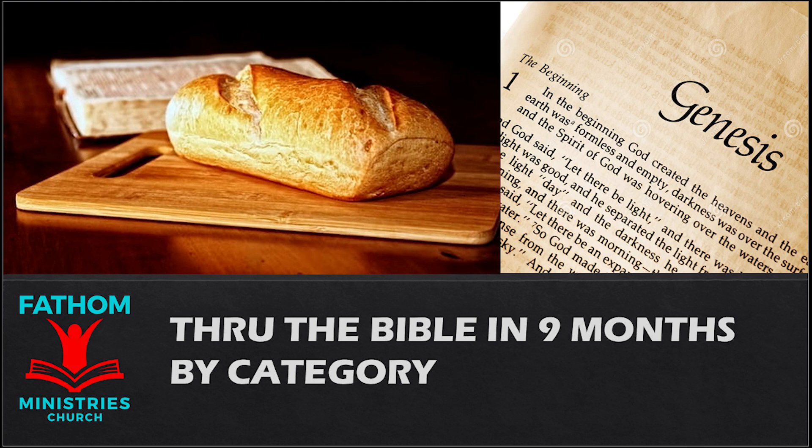Tell me, you who desire to be under the law, do you not listen to the law? For it is written that Abraham had two sons, one by a slave woman and one by a free woman. But the son of the slave was born according to the flesh, while the son of the free woman was born through promise. Now this may be interpreted allegorically. These women are two covenants. One is for Mount Sinai, bearing children for slavery. She is Hagar. Now Hagar is Mount Sinai in Arabia. She corresponds to the present Jerusalem, for she is in slavery with her children. But the Jerusalem above is free, and she is our mother.